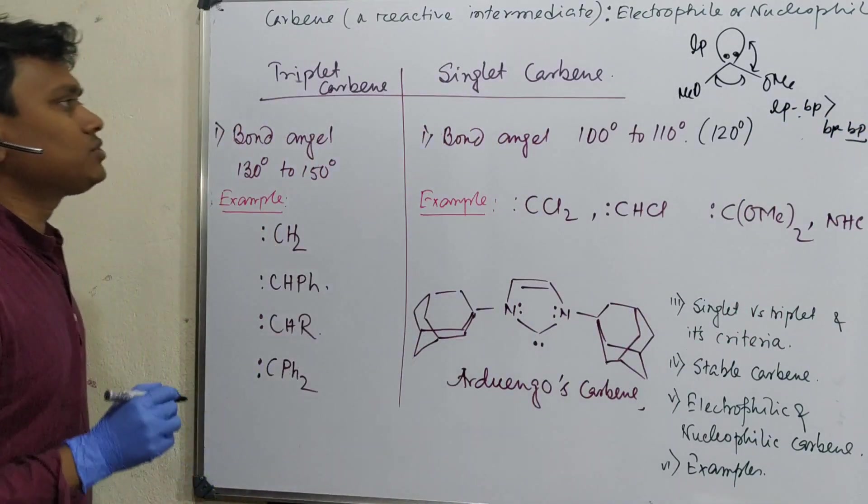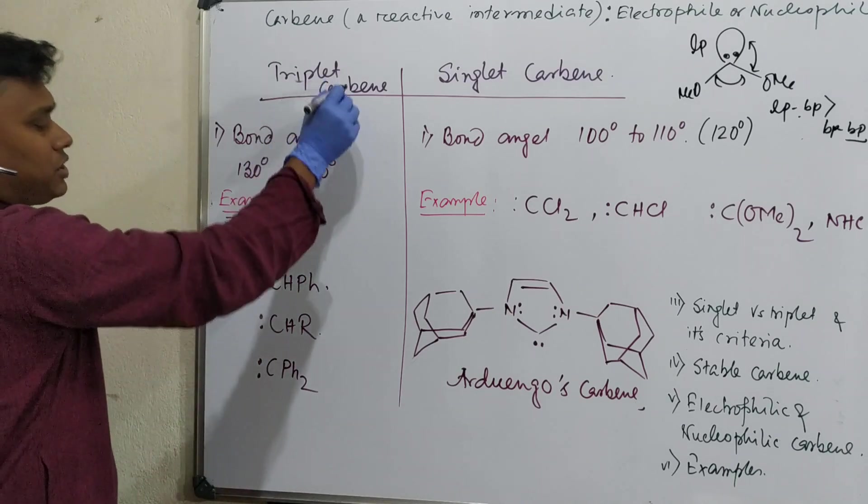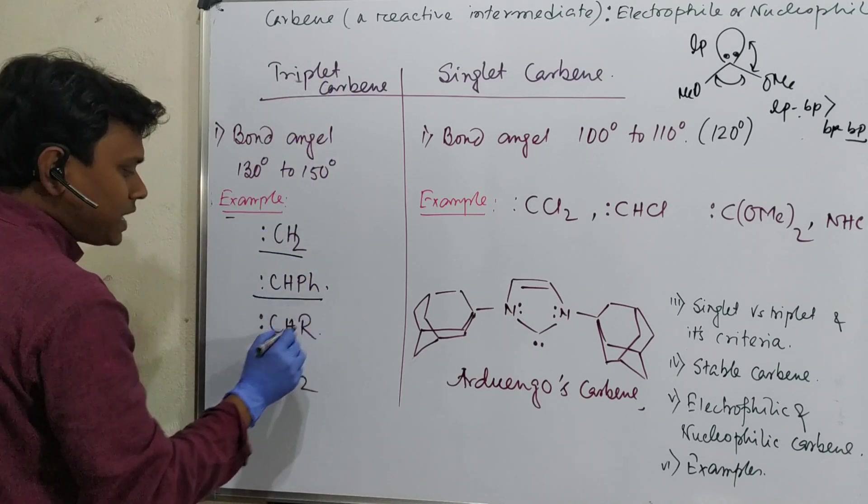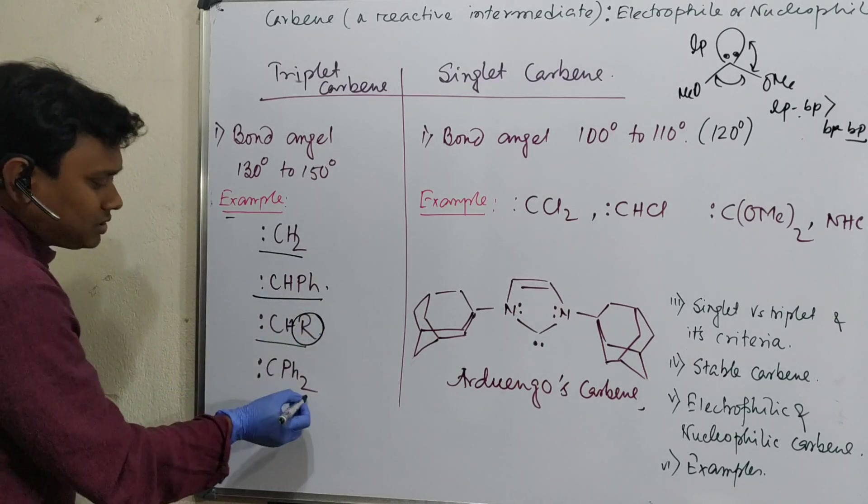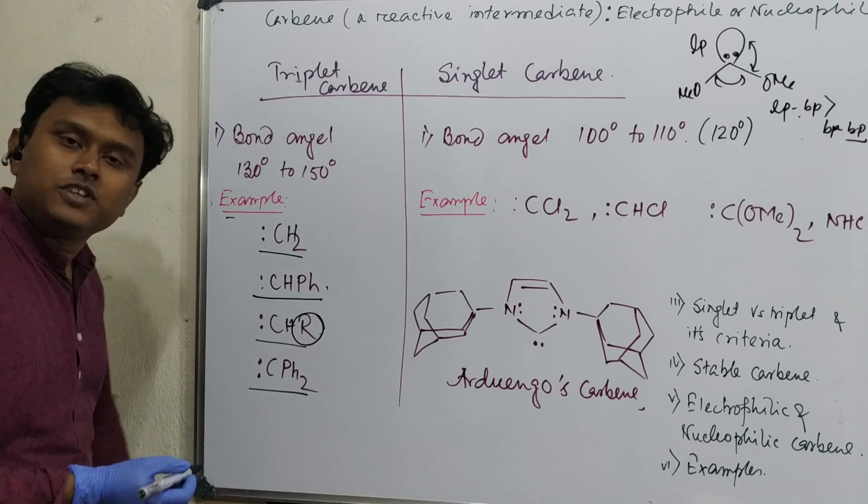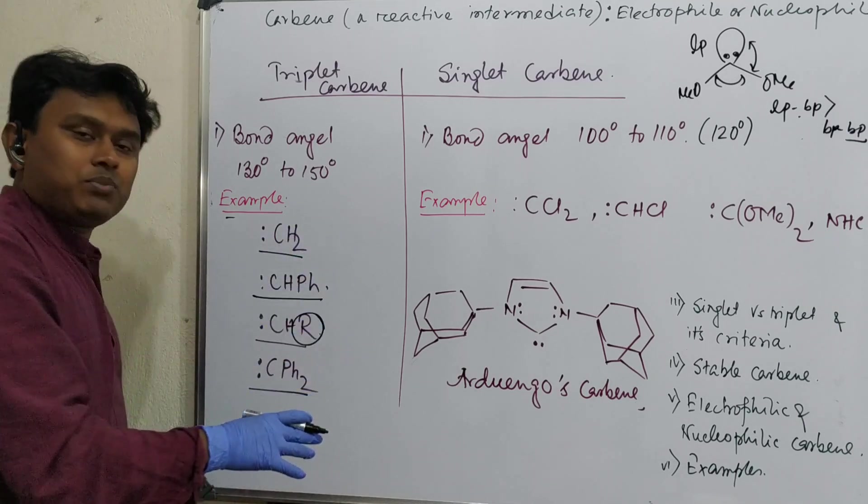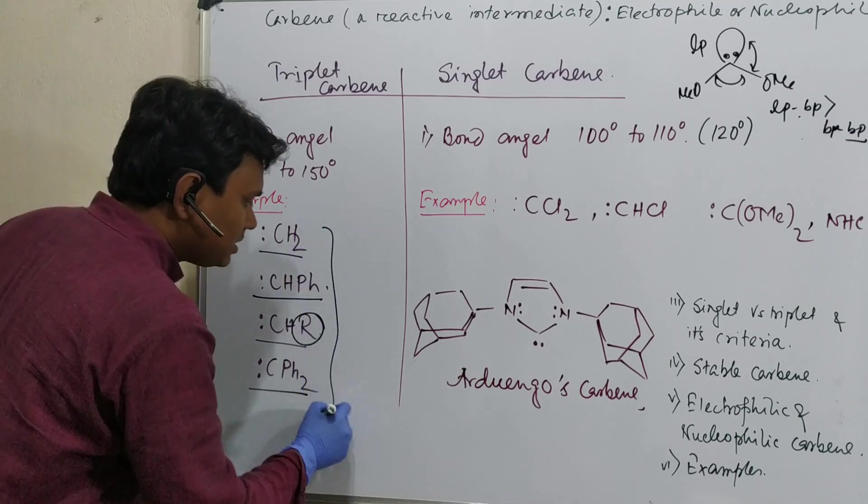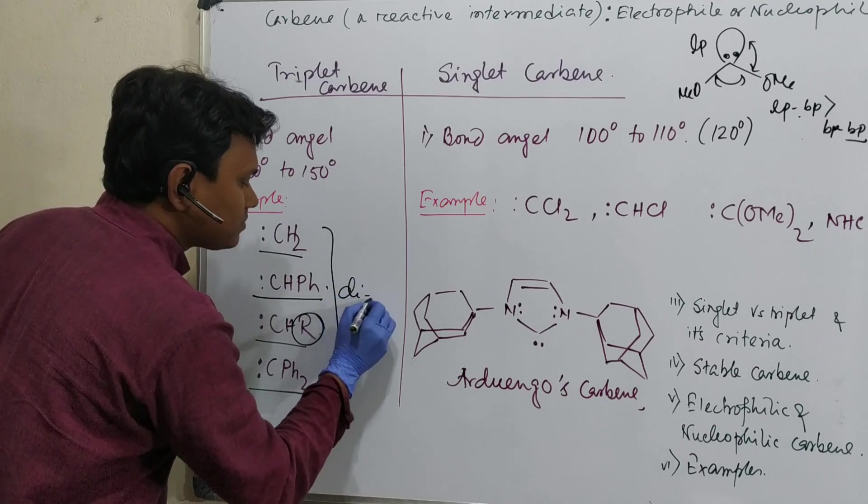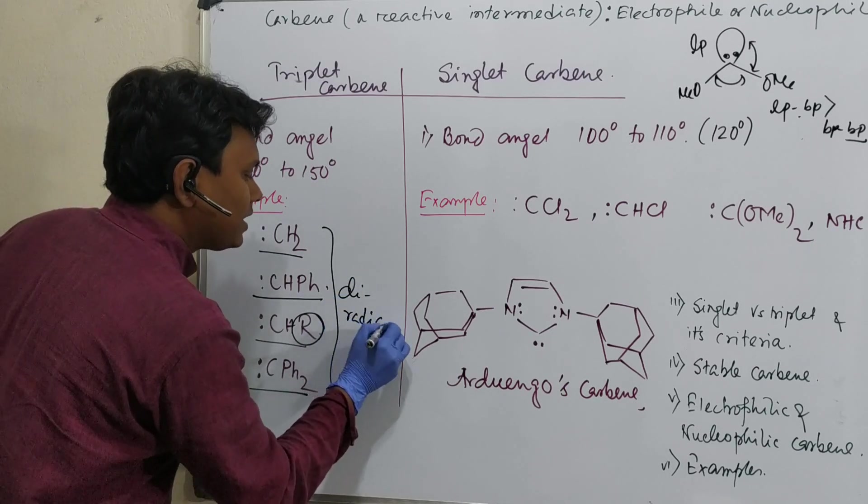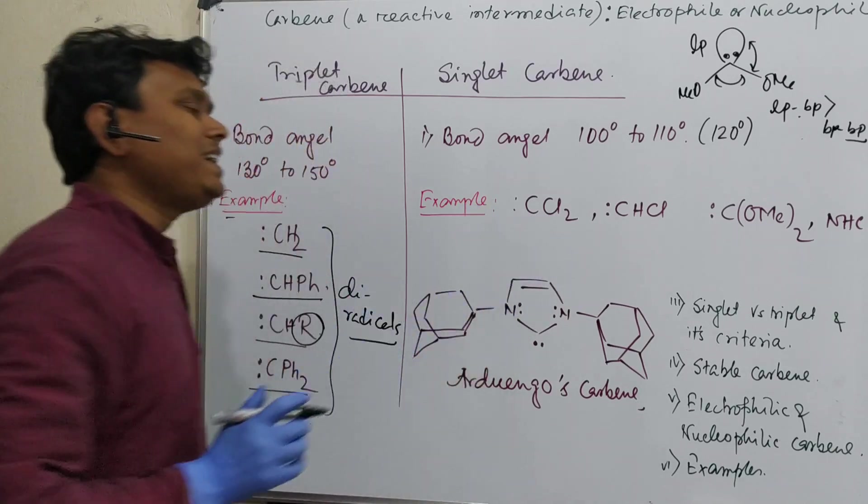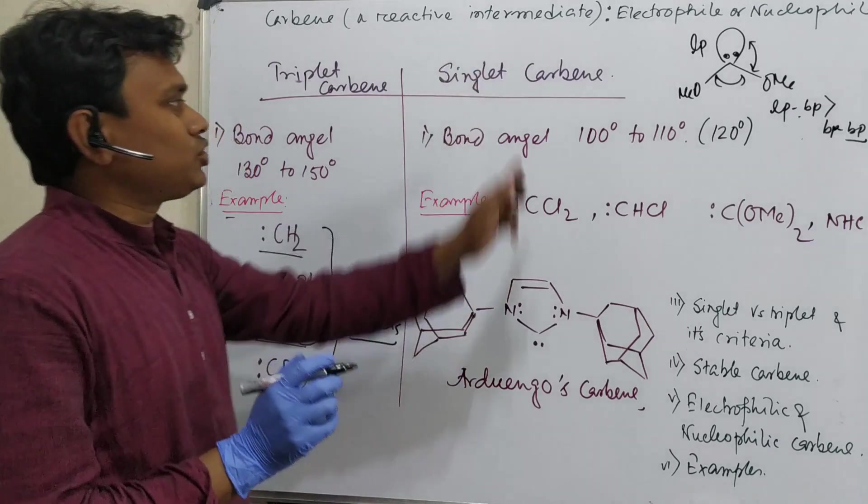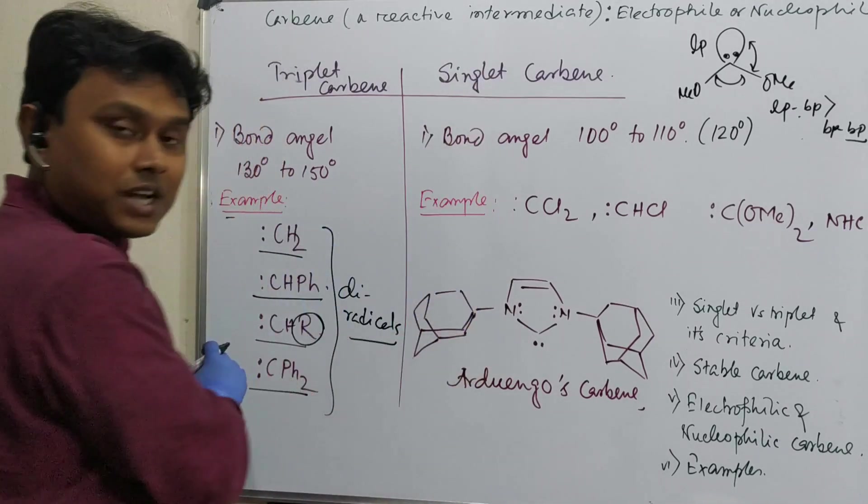Now let me give you some real examples. For example, triplet carbene examples are methylene CH2, CHPH, CHR - you can think alkyl group, or CPH - diphenyl carbene. So these are the examples of triplet carbene, means these are diradicals.